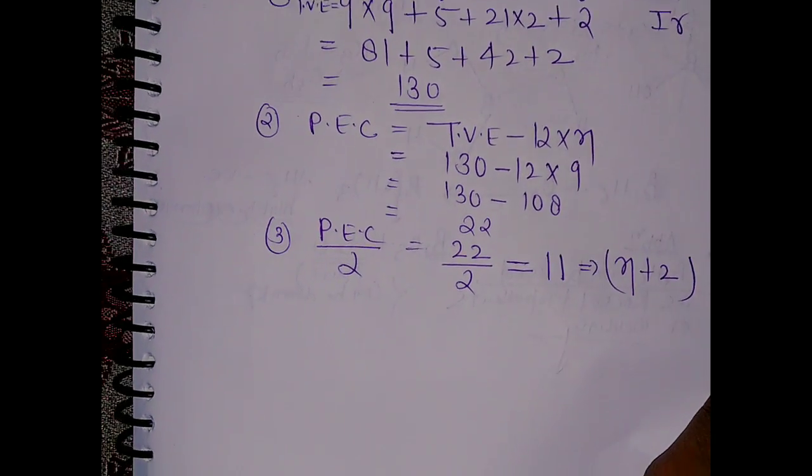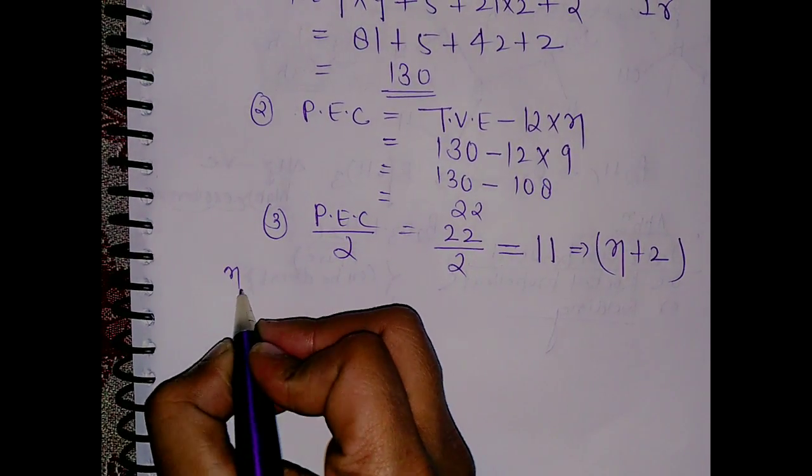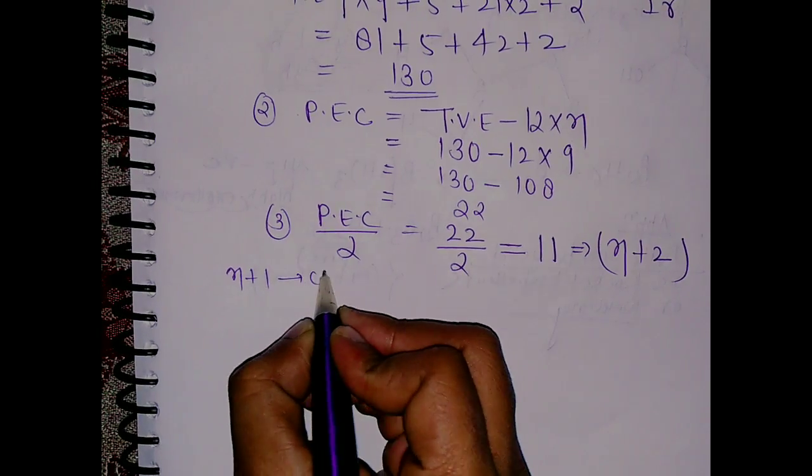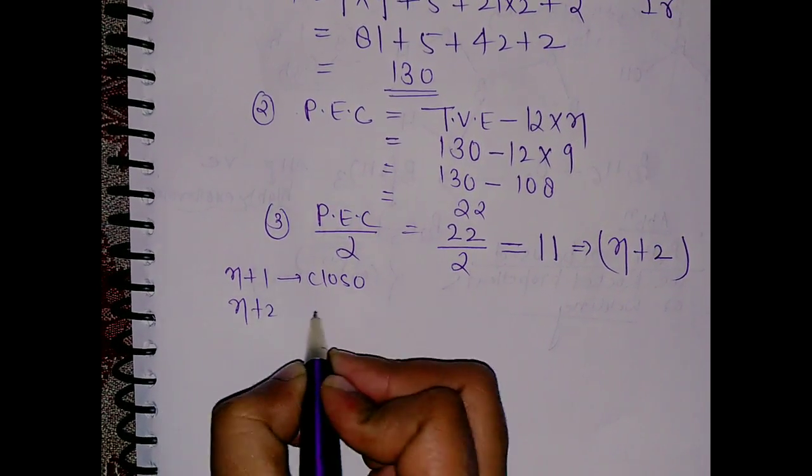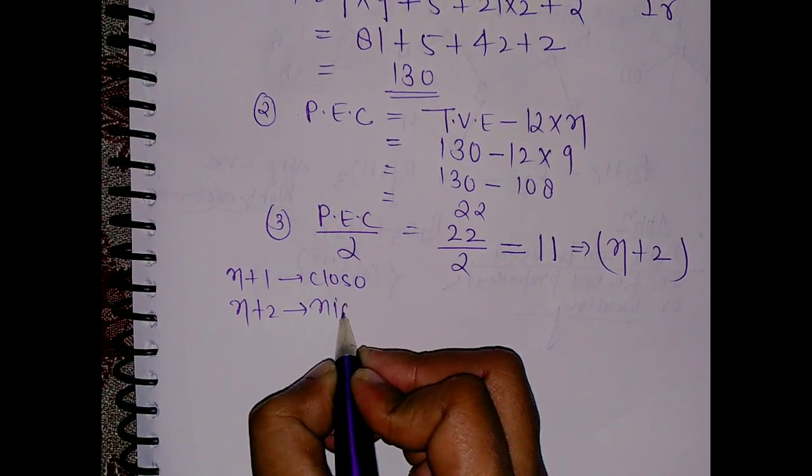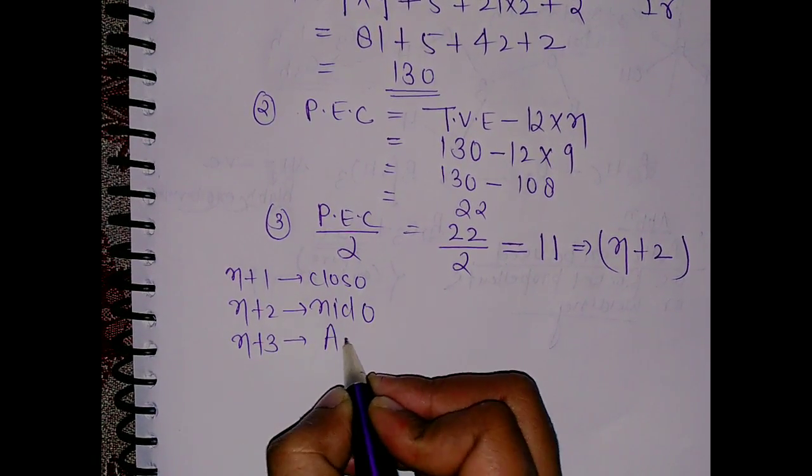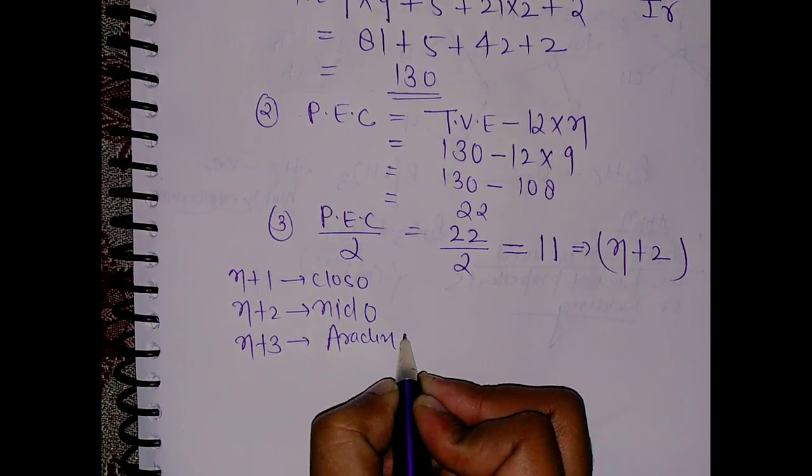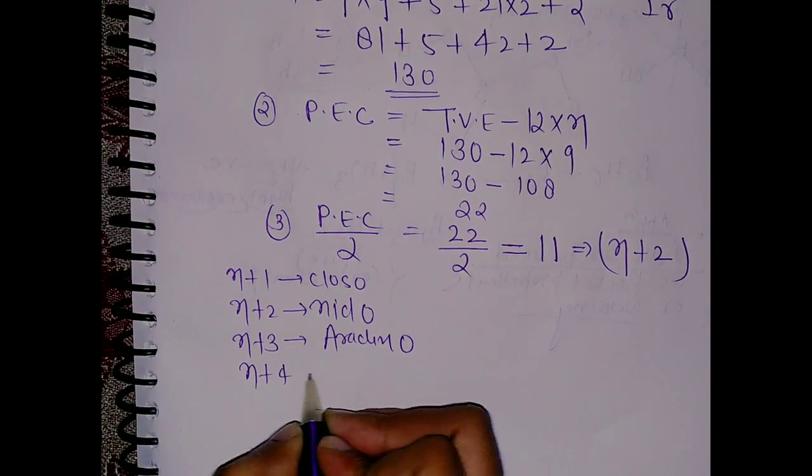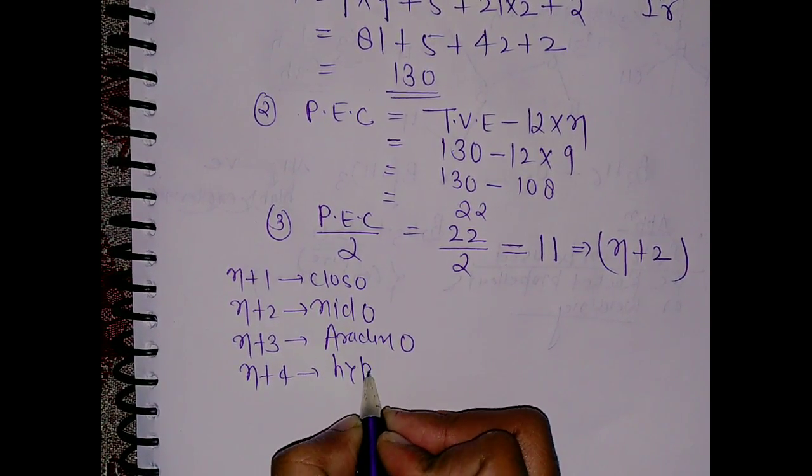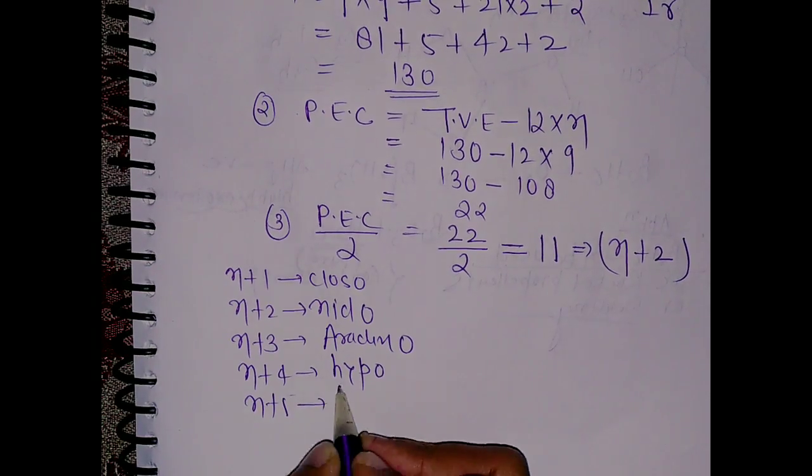We all know that if we have n+1, the structure is closo. If we have n+2, we have nido. If we have n+3, we have arachno.